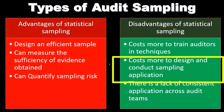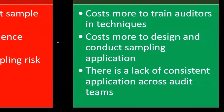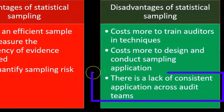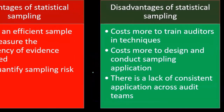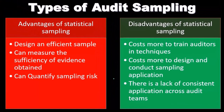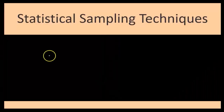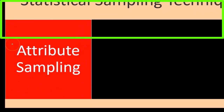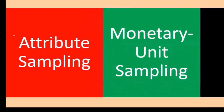It costs more to design and conduct a statistical sampling application, so we need a formal cost-benefit analysis. There is also a lack of consistent application across audit teams — different teams could apply it differently. With non-statistical sampling, we might have a more formalized set of general rules applied consistently across teams.